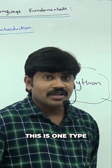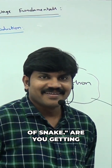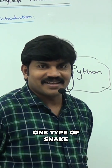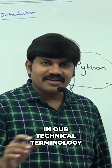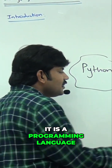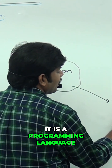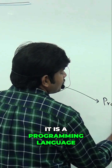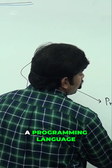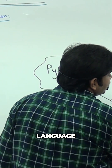Don't tell sir, this is one type of snake. You get him — don't tell — it is one type of snake, sir. In our technical terminology, it is a programming language. Observe that it is a programming language, right?